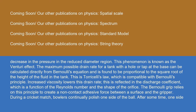The maximum possible drain rate for a tank with a hole or tap at the base can be calculated directly from Bernoulli's equation and is found to be proportional to the square root of the height of the fluid in the tank. This is Torricelli's law, which is compatible with Bernoulli's principle. Increased viscosity lowers this drain rate, reflected in the discharge coefficient, which is a function of the Reynolds number and the shape of the orifice. The Bernoulli grip relies on this principle to create a non-contact adhesive force between a surface and the gripper.